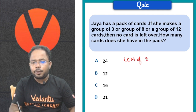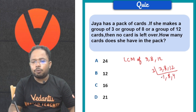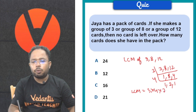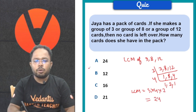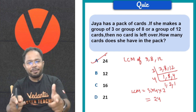LCM of 3, 8, and 12. Breaking it down: 3, 8 and 12 give us factors of 3, 4, and 2. So LCM equals 3 into 4 into 2. That gives 3 fours are 12, 2s are 24. So humara right answer hoga 24. Thik hai bachyo?